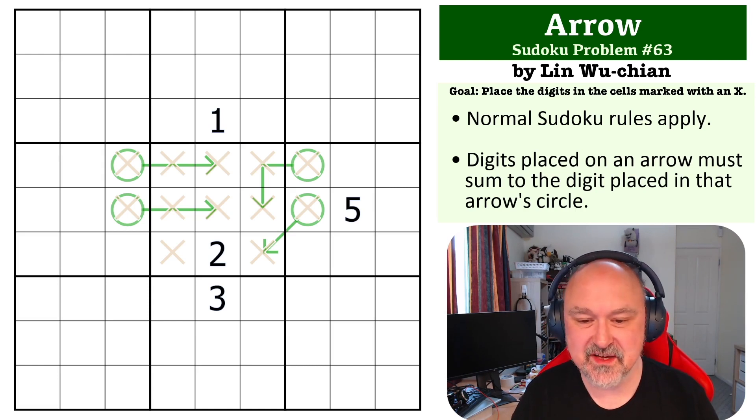The way arrows work is the digits placed on the arrows must sum to the digit placed in that arrow's circle. The goal of this one is to place digits in all of the cells marked with an X.